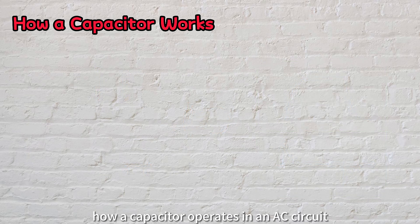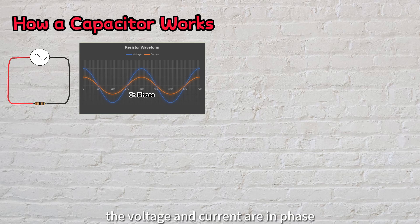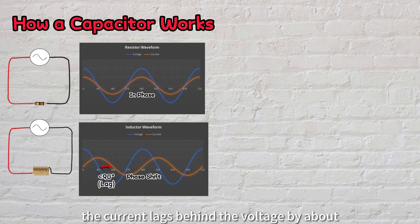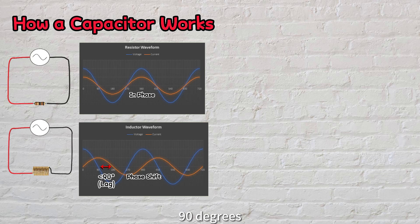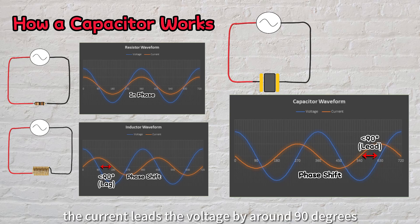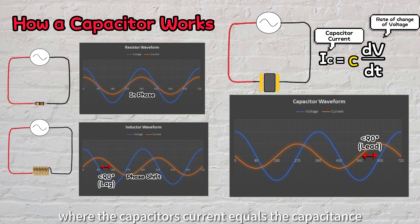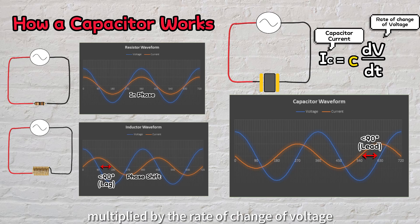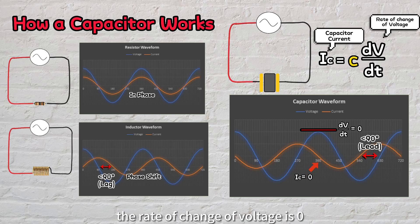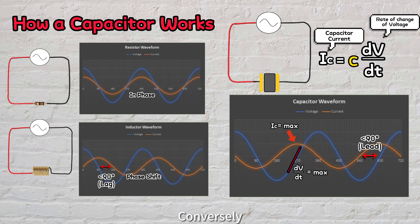Now let's explore how a capacitor operates in an AC circuit. In our previous video, we explained that in a circuit with only a resistor, the voltage and current are in phase. However, in an inductive circuit, the current lags behind the voltage by about 90 degrees. In a capacitive circuit, it's the opposite — the current leads the voltage by around 90 degrees. To calculate this, we use the formula where the capacitor's current equals the capacitance multiplied by the rate of change of voltage. At the peak voltage point, the rate of change of voltage is zero, resulting in no current flowing during this time. Conversely, when the rate of change of voltage is at its maximum, the current reaches its peak.